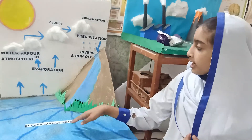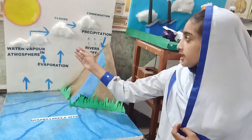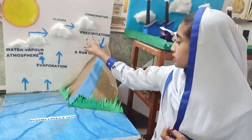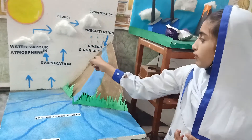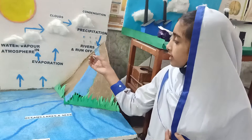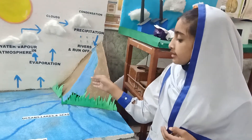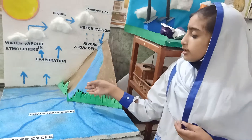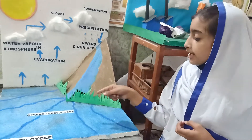These water vapors mix in the atmosphere and then fall in the form of precipitation. Precipitation includes forms such as rain, hail, and snowfall, resulting in the continuation of the water cycle.